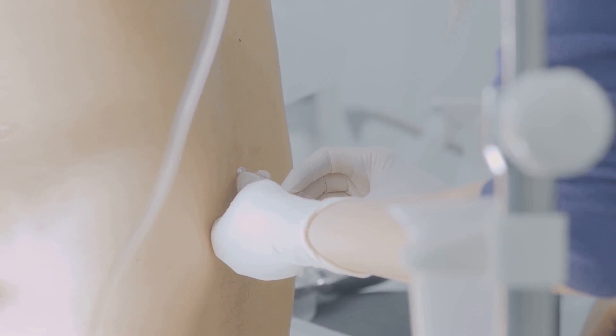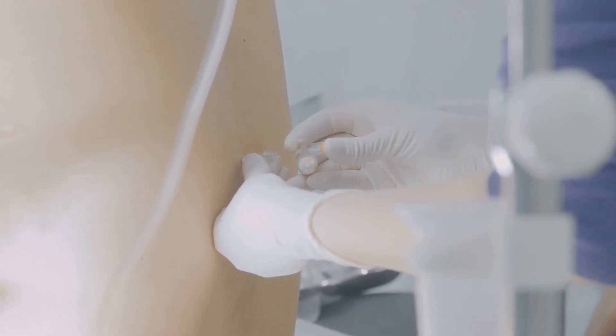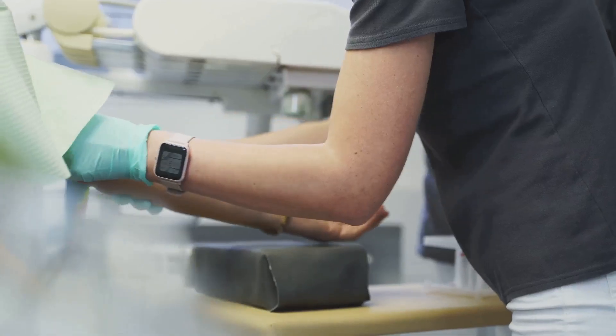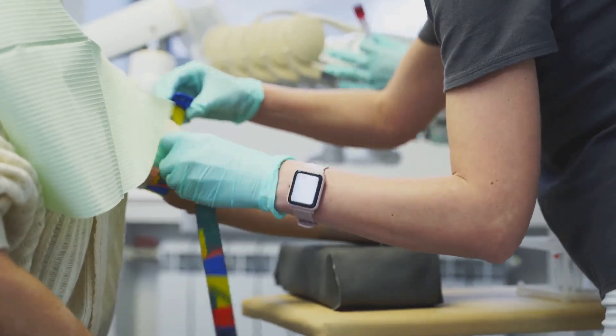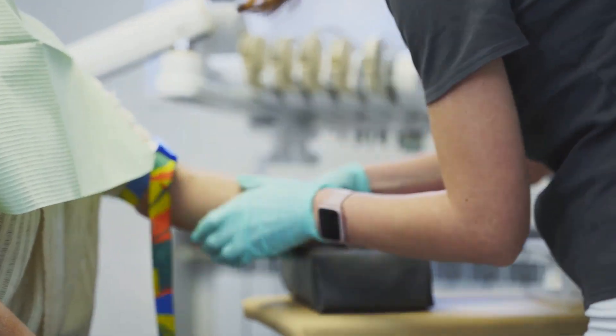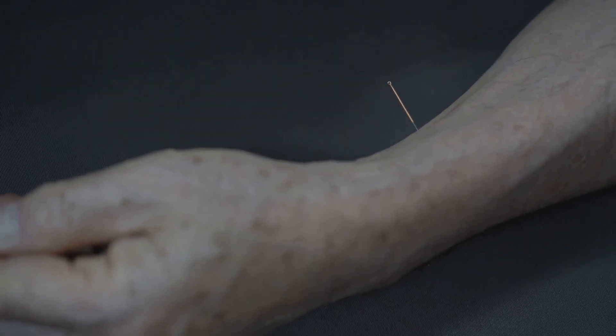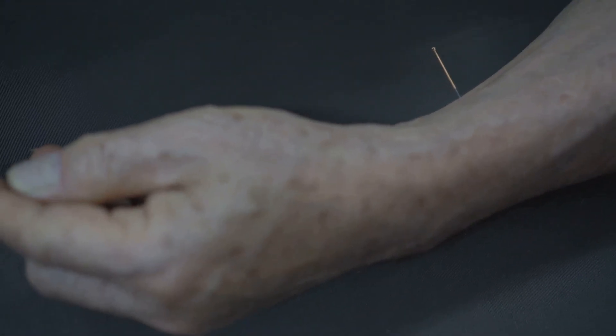First, locate a suitable vein. Take your time and assess both arms, as some veins are easier to access than others. Apply the tourniquet above the elbow and ask the patient to clench their fist. This helps the veins become more prominent and easier to find. Look for a bouncy, prominent vein on the back of the hand or forearm.